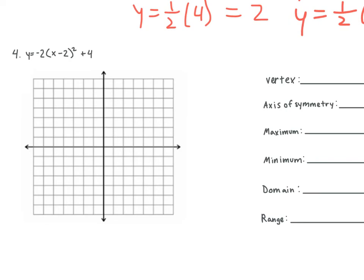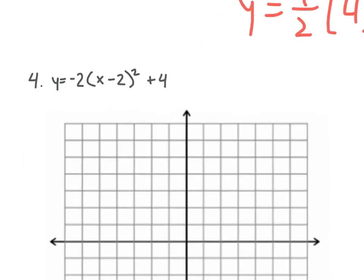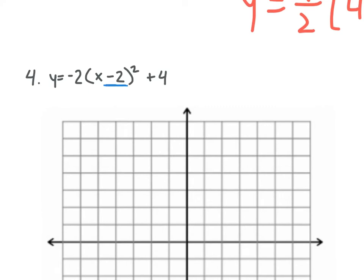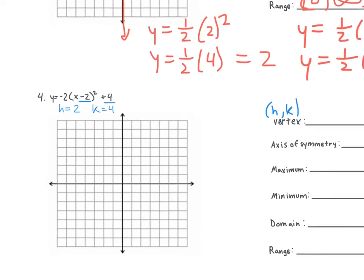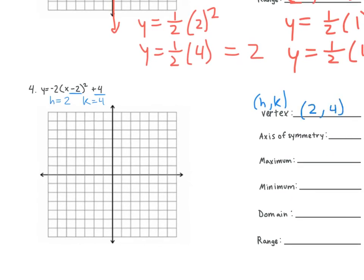Let's do number four. Is this in vertex form or standard form? Vertex form. In vertex form we have h comma k. Remember, h is the one inside the parentheses — think of it as inside the house. And k is the one outside. When it's inside the parentheses, we change the sign, so it becomes positive 2. What's our k? Four. So our vertex is 2 comma 4, and our axis of symmetry is x equals 2. We go to the right 2 and up 4, then put a line right through our point.